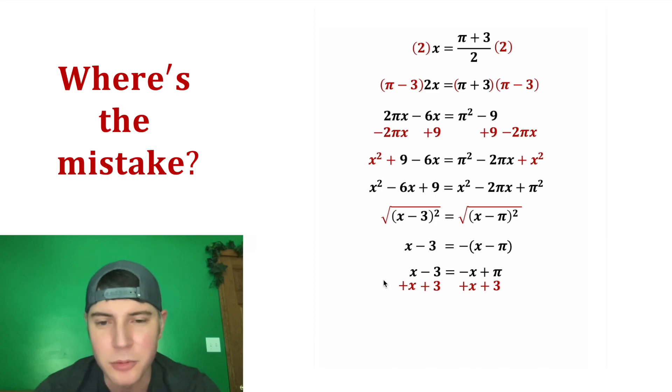Let's add x to both sides and add 3 to both sides. On the left hand side the 3's cancel, which gives us 2x. And on the right hand side the x's cancel, which gives us pi plus 3. And after we divide both sides by 2, we get x is equal to pi plus 3 over 2.